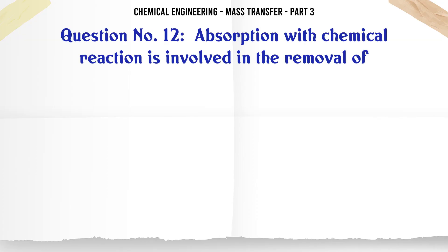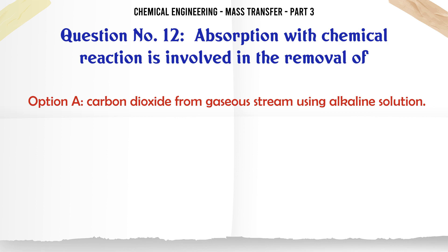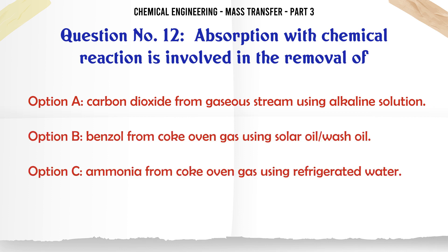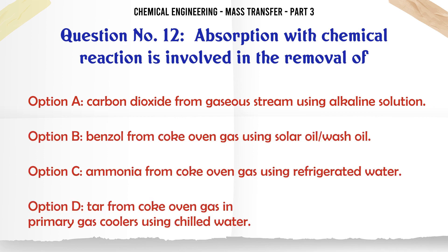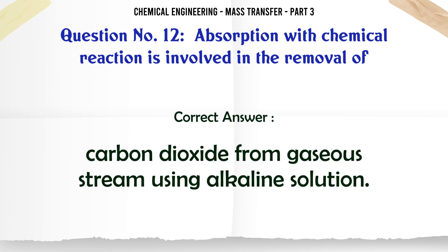Absorption with chemical reaction is involved in the removal of: A) carbon dioxide from a gaseous stream using alkaline solution, B) benzol from coke oven gas using solar/wash oil, C) ammonia from coke oven gas using refrigerated water, D) tar from coke oven gas in primary gas coolers using chilled water. The correct answer is: carbon dioxide from a gaseous stream using alkaline solution.